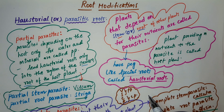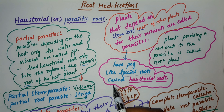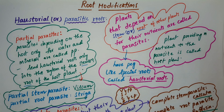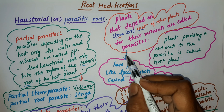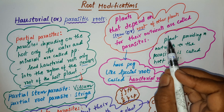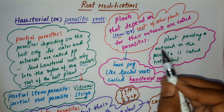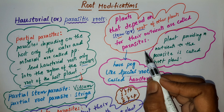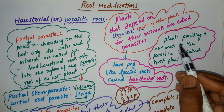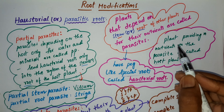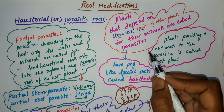Root modifications - which modifications are we looking at? In this class, we are learning about haustorial or parasitic roots. What is meant by parasites? Plants that depend on the stem or roots of other plants for their nutrients are called parasites.